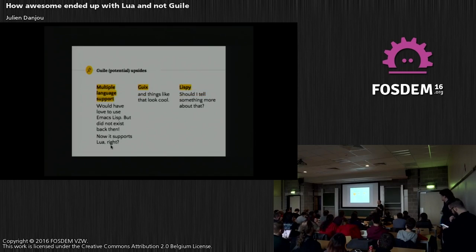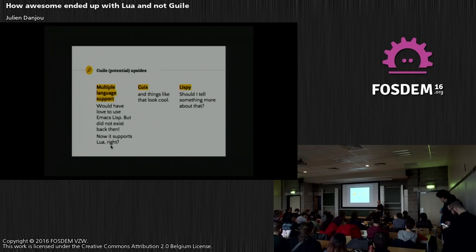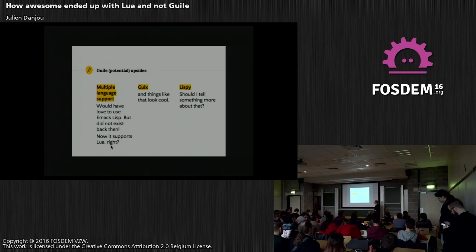We didn't use Guile, but I still see a few upsides to Guile that we might have been able to use — like multiple language support that came with version 2. I don't know if it works today in Lua; it doesn't. I would have loved personally to use Emacs Lisp because I've done a lot of Emacs over the past years. Since then I've switched my mind and do prefer Lisp a lot. I think Emacs is kind of the model I realized I should have probably followed.